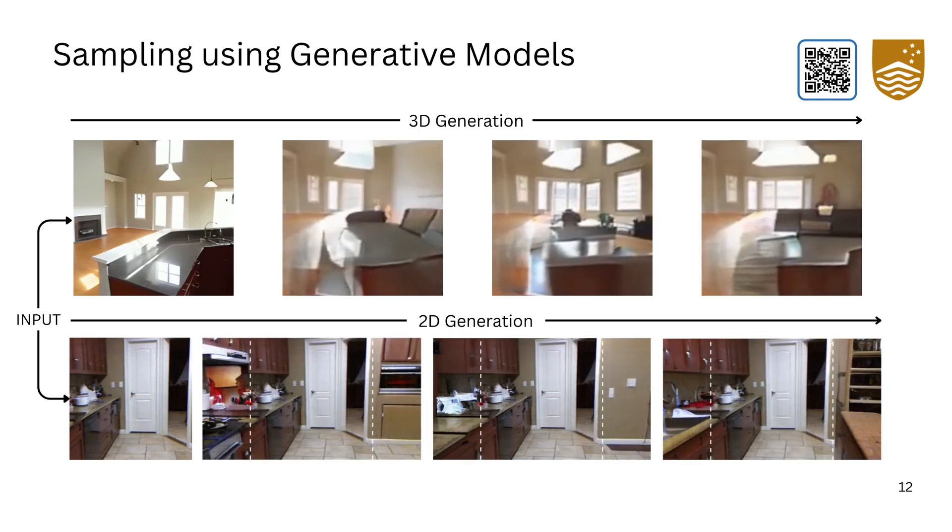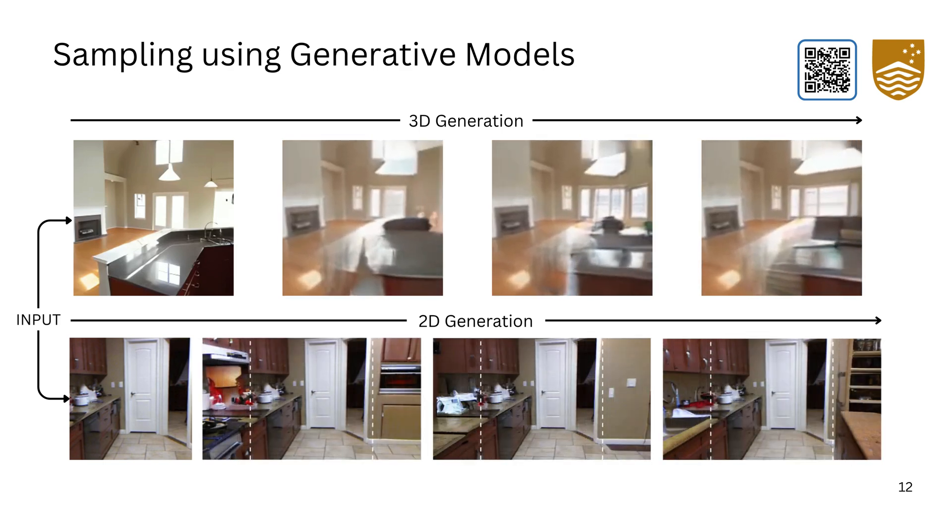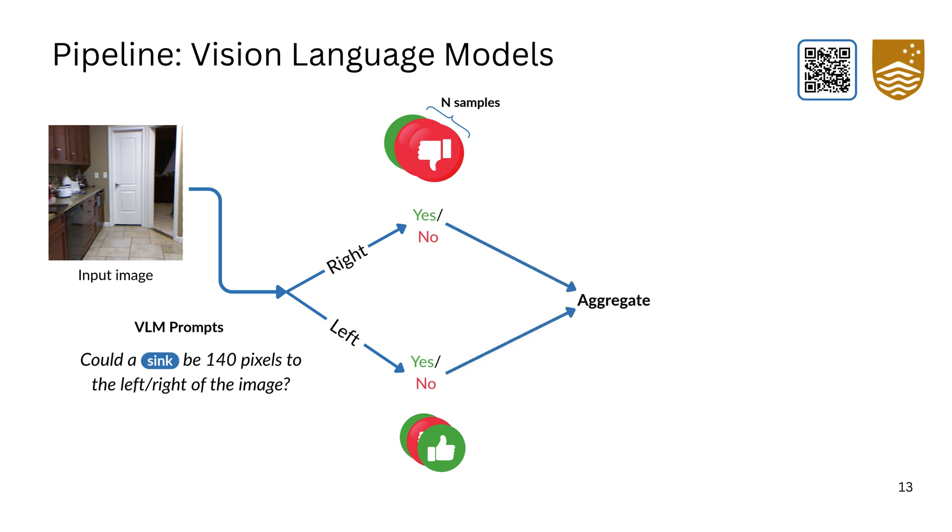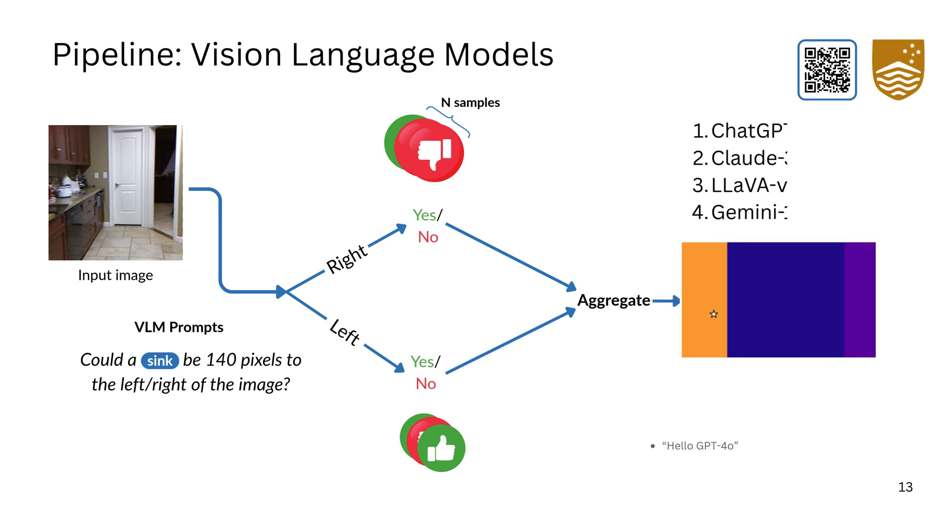Current generative models can recreate plausible configurations of unobserved elements in 2D or 3D in a scene using the input as context. Thus, using generative models, we define our three pipelines for this task. First, we use vision language models to query using the input image the spatial contexts in 2D for plausible region-wise positions. We evaluate several VLMs where model confidence is computed from the normalized count of affirmative responses across the three regions. This is followed by aggregation and normalization into a 2D heatmap.